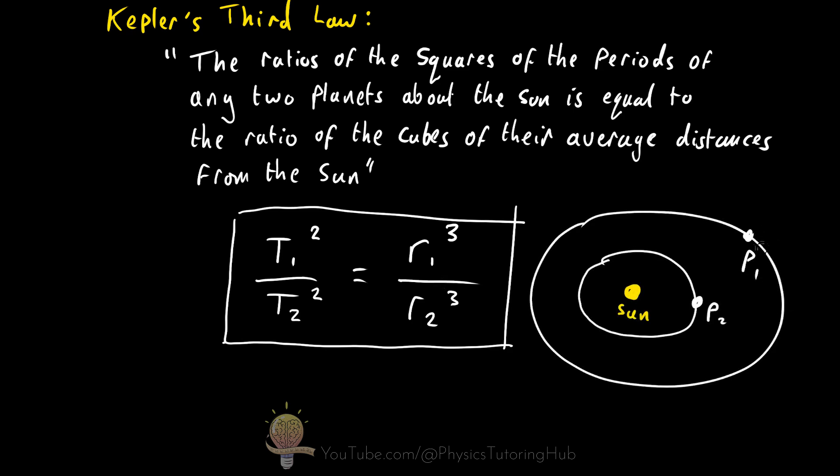So this is planet one. This is planet two. We're interested in the average distance. And the period is simply the time it takes for the planet to complete one orbit around the Sun. So let's understand this better with an example problem.